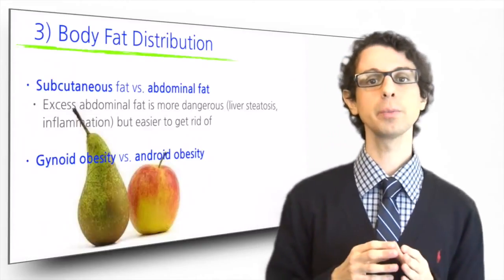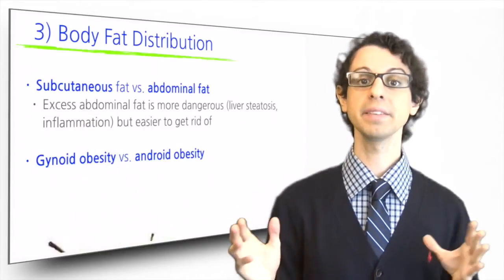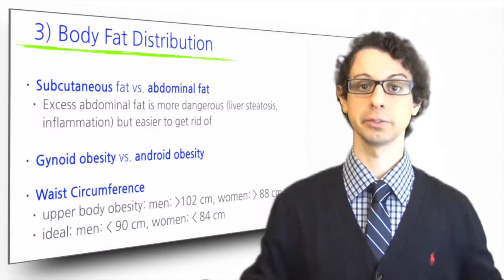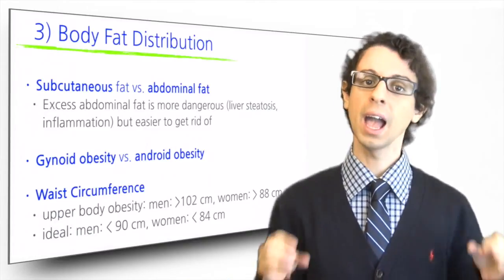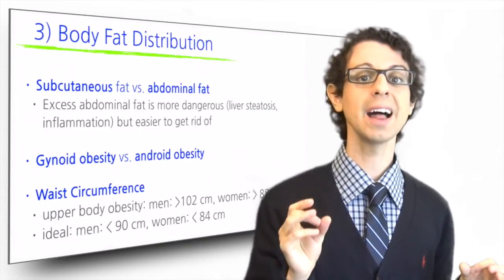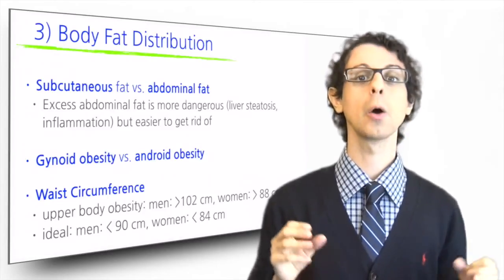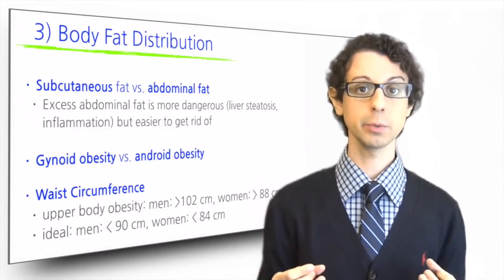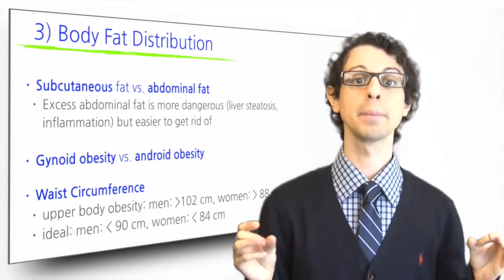An easy anthropometric measure to evaluate body fat distribution is measuring the waist circumference, just above the hips. A waist circumference of more than 102 centimeters in men or more than 88 centimeters in women is an indicator of upper body obesity.